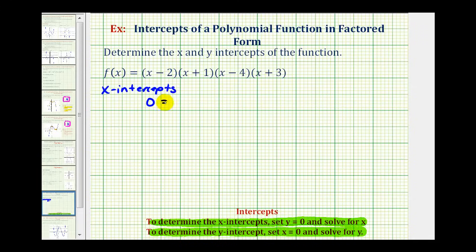So we would have zero equals the quantity x minus two, times the quantity x plus one, times the quantity x minus four, times the quantity x plus three. Well this product will be equal to zero wherever each factor is equal to zero.